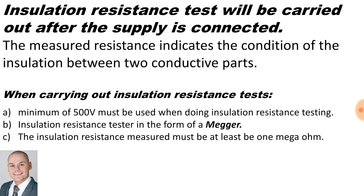An insulation resistance test will be carried out after the supply is connected. The measured resistance indicates the condition of the insulation between two conductor parts. Three important things to note: a minimum of 500 volts must be used, the insulation resistance tester takes the form of a megger, and the insulation resistance must be a minimum of one mega ohm.